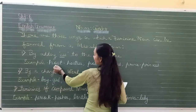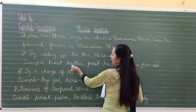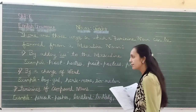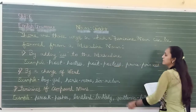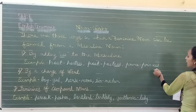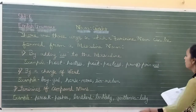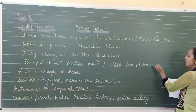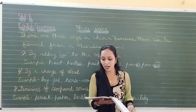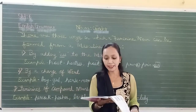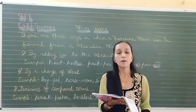For example: host — H-O-S-T — becomes hostess. Poet becomes poetess — E double S is added. Prince becomes princess; since 'prince' already ends in E, we simply add double S. Other examples: lion becomes lioness, shepherd becomes shepherdess, priest becomes priestess.